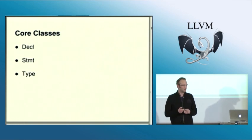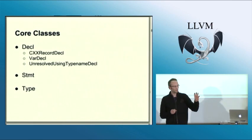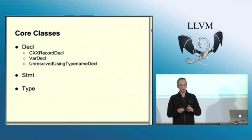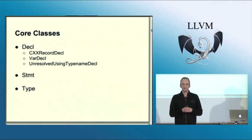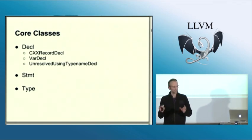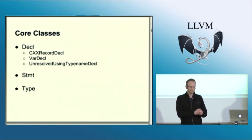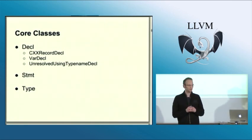The AST context also provides the entry point into the AST, which is a function called getTranslationUnitDecl that gives you the TranslationUnitDecl. With that we go into the core classes of Clang's AST: declarations, statements, and types. Those are the classes that have identity in the Clang AST — they also have pointer identity, which means if you have two of them, you can compare their pointers to figure out whether they're equal. Notably, there is no common base class, which also means there's no common way to visit all of them.